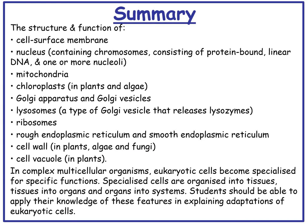In summary, for this part of the specification you need to know the structure and function of the cell surface membrane, nucleus, mitochondria, chloroplasts, Golgi apparatus and Golgi vesicles, lysosomes, ribosomes, rough endoplasmic reticulum, smooth endoplasmic reticulum, cell wall, and cell vacuole. You also need to know that in complex multicellular organisms eukaryotic cells have become specialised for specific functions, and that specialised cells are organised into tissues, tissues into organs, and organs into systems.